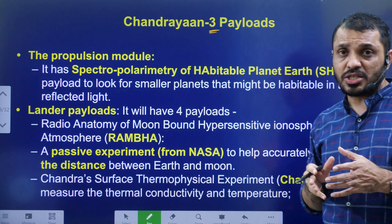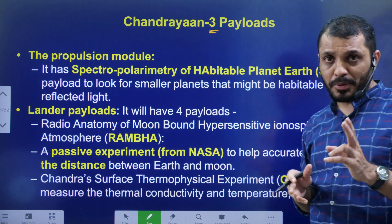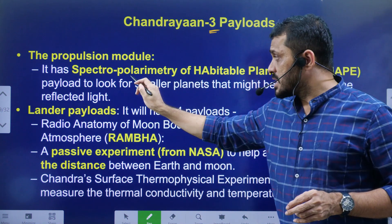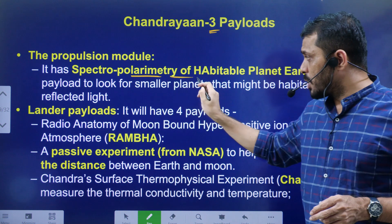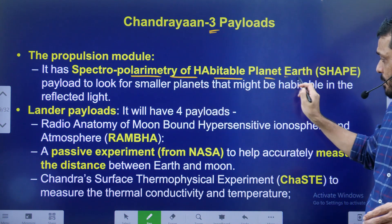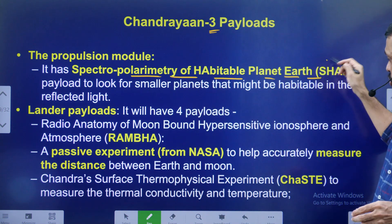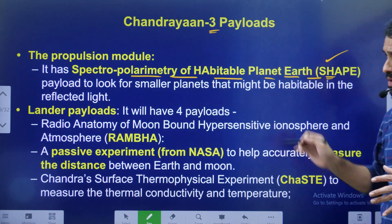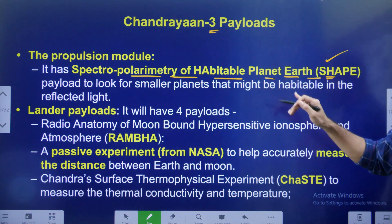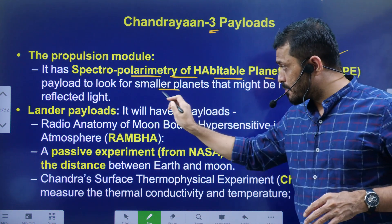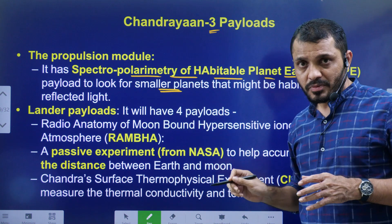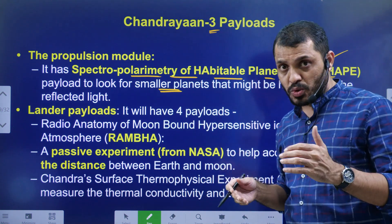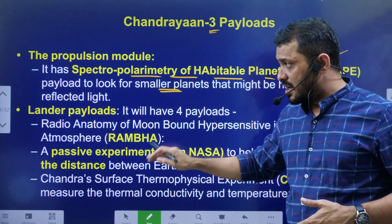Chandrayaan-3 payloads. Number one: the Propulsion Module contains the SHAPE instrument — Spectro-Polarimetry of Habitable Planet Earth. This is a very important element from an MCQ point of view. This payload mainly looks for smaller planets present near our solar system.